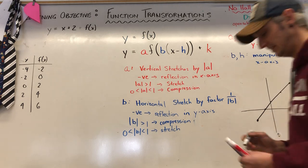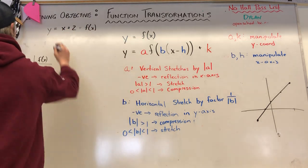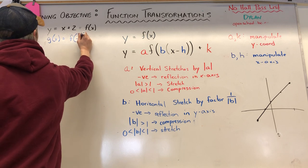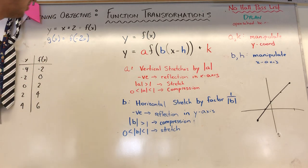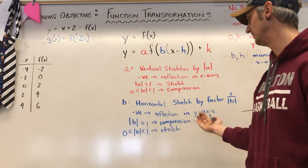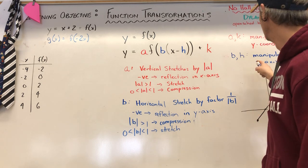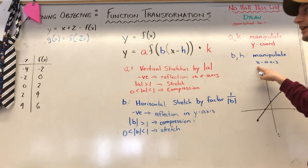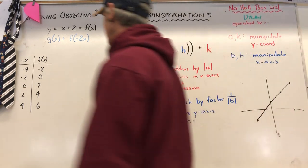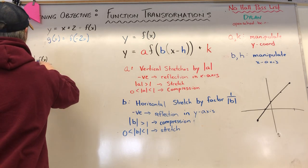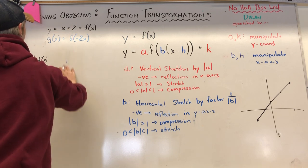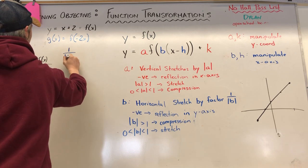Now I'm going to say g of x is equal to f of negative 2x. My b is negative 2, so the negative is telling me it's going to be a reflection in the y-axis. I'm not going to do anything to my y-coordinates — I'm just going to manipulate my x-coordinates. I'll be multiplying x-coordinates by negative one, and also applying a stretch factor of one over the absolute value of b, which is one over 2.